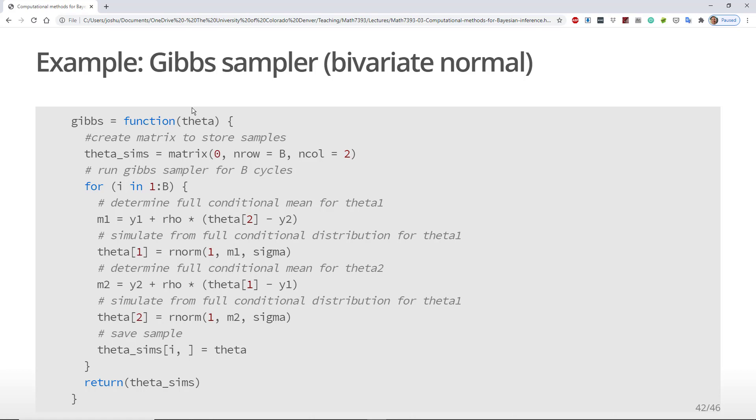It's an abuse of global variables and can cause you headaches if you aren't careful. So my Gibbs sampler function, which I've called Gibbs, takes the starting vector theta. Within the function, I first create a matrix theta_sims to store the output of the chain. The number of rows matches b, and there are two columns since we have two values in theta.